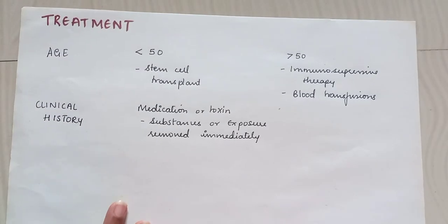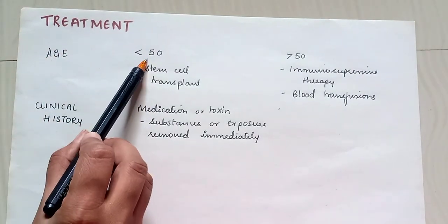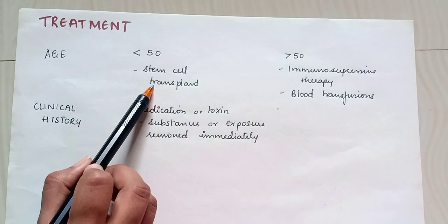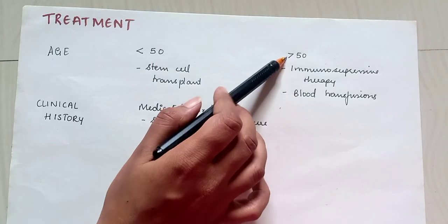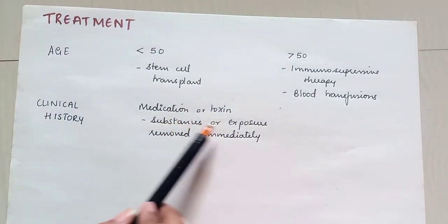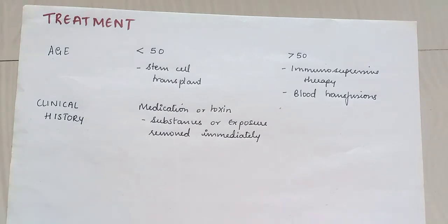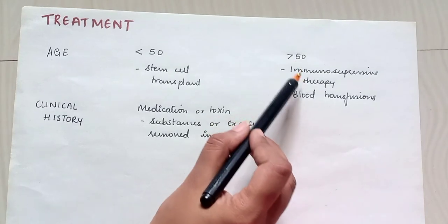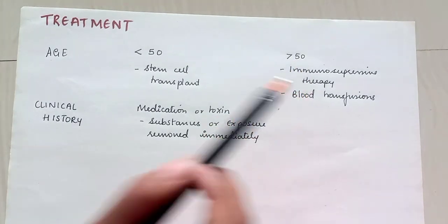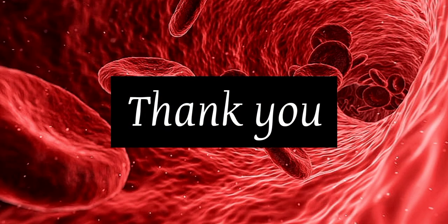For treatment, if a person is below the age of 50, stem cell transplant is recommended. Above that age, immunosuppressive therapy is used. If the clinical history shows exposure to medications or toxins, those substances must be removed immediately. Thank you for watching the video.